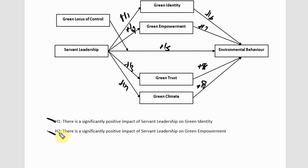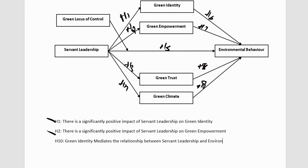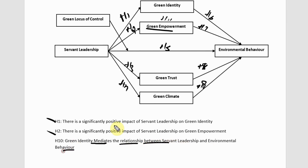How to do this? Let's have a look. Let's say it is H10: green identity mediates the relationship between servant leadership and environmental behavior. This is your mediating hypothesis. And again you can do the same for the other ones as well. This is H10, this is H11: green empowerment mediates the relationship between servant leadership and environmental behavior.